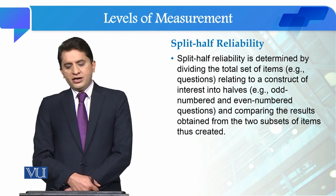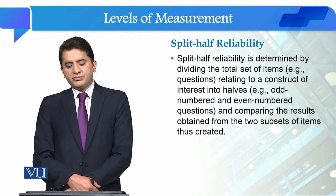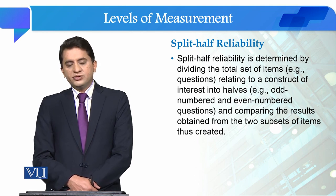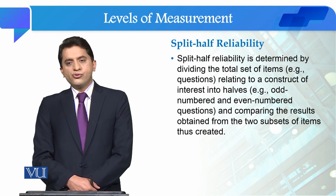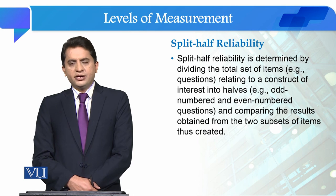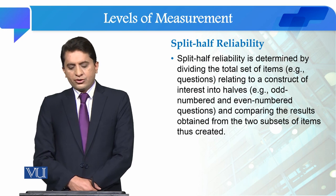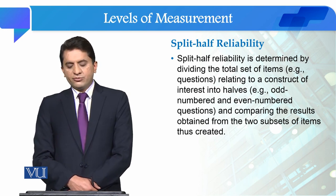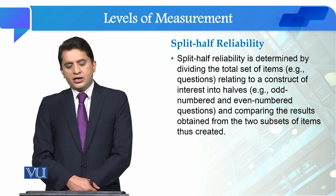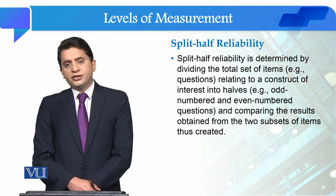Split-half reliability is determined by dividing the total set of items relating to a construct of interest into two halves — for example, even numbers or odd numbers — and comparing the results obtained from these two subsets of items.